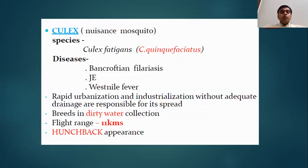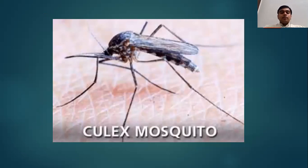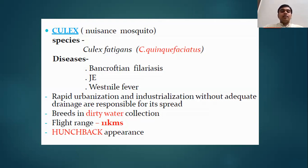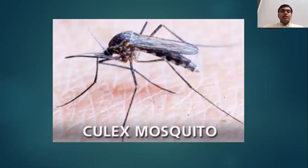Culex is also known as the nuisance mosquito. The species is Culex fatigans, and diseases transmitted are Bancroftian filariasis, Japanese encephalitis, and West Nile fever. Rapid urbanization and industrialization without adequate drainage are responsible for its spread. It breeds in dirty polluted water, has the highest flight range of around 11 kilometers, and the hunchback appearance is seen in adults. It is known as the nuisance mosquito because of the typical buzzing sound it makes around your head and near your ears — the nuisance caused by the fluttering of its wings.